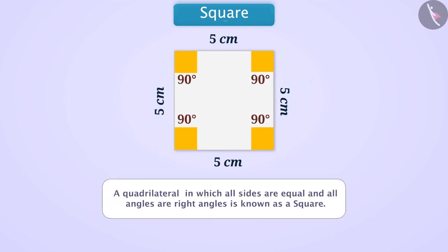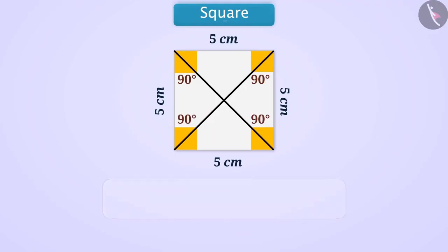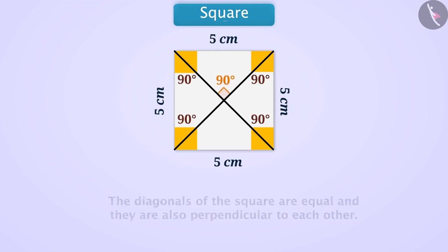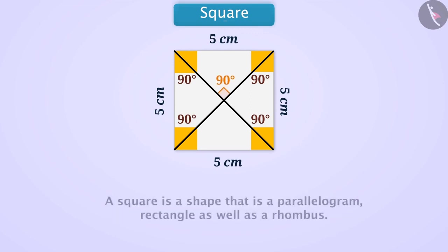Such a quadrilateral in which all sides are equal and all angles are right angles is known as a square. If we measure its diagonals, they are equal and are perpendicular to each other, meaning they cut each other at 90 degrees. Square is a figure which is a parallelogram, a rectangle, as well as a rhombus. Can you find out the reason why this is so? Try this yourself.